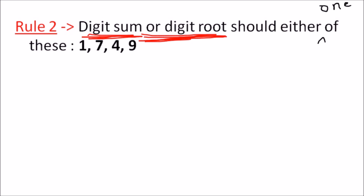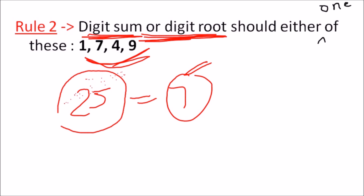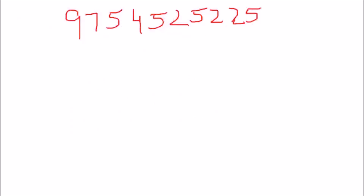For example, the digit sum of 25 would be 7 (2 + 5 = 7). Now 7 satisfies Rule 2, since the digit sum must be one of 1, 4, 7, or 9 — and 7 is present in that list. So this simply means the number 25 lies in the category of being a perfect square.